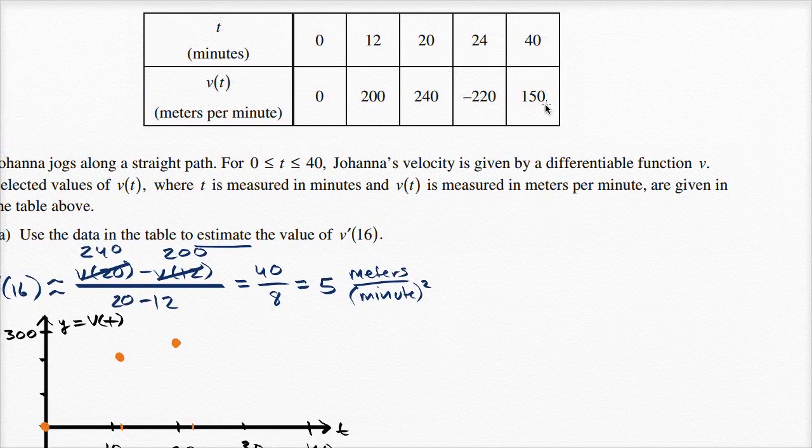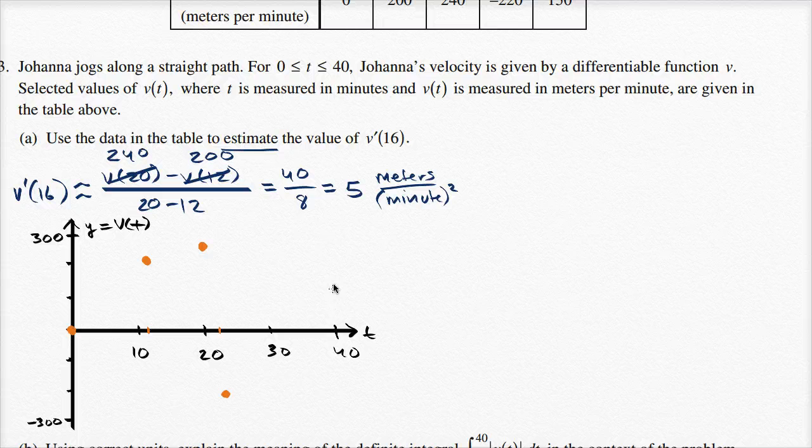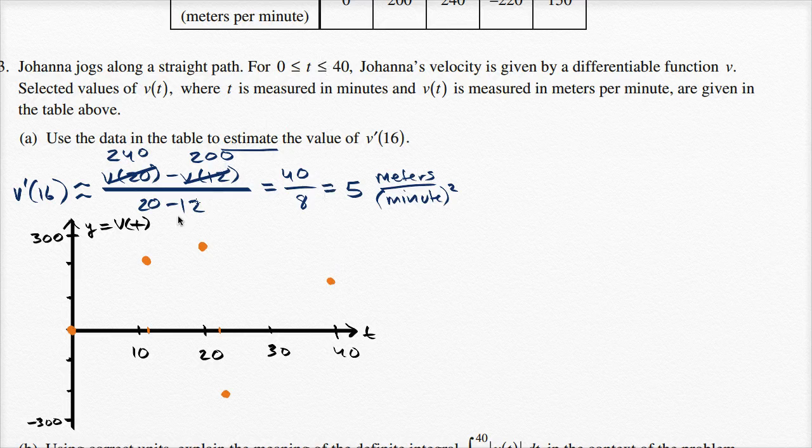And then finally, when time is 40, her velocity is 150, positive 150. So at 40, it's positive 150. And so these are just sample points from her velocity function.